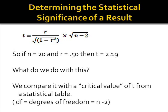Let's say that r is equal to 0.5 and n equals 18. If you substitute these numbers into this equation, you will find that t is equal to 2.19.